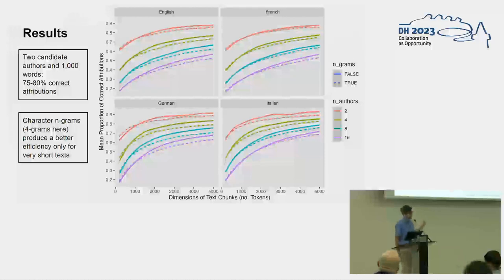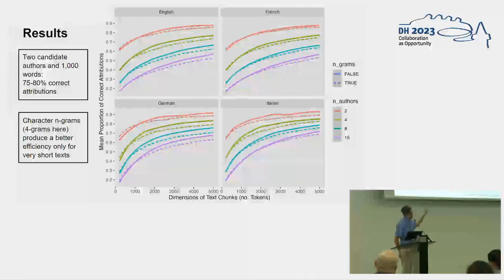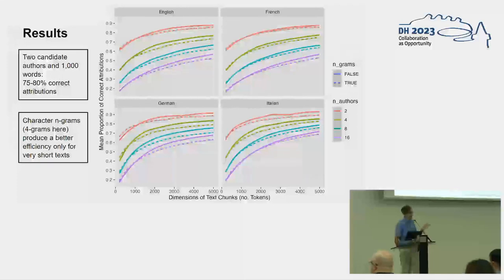Here is an overview of the results. The dimensions of the text chunks move from 200 to 5000 words, and you can see the mean proportion of correct attributions. I highlight two aspects: the number of authors — between two and sixteen — and the use or not of character n-grams. When working with just two candidate authors and one thousand words, you already reach 75–80% correct attributions.